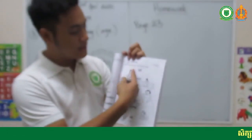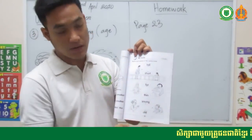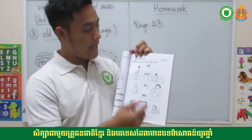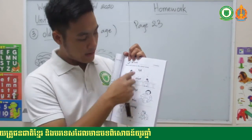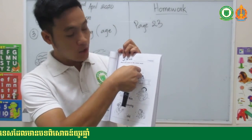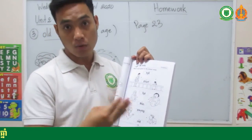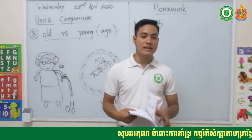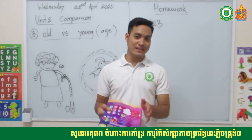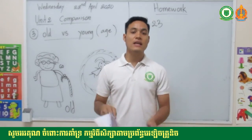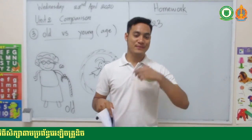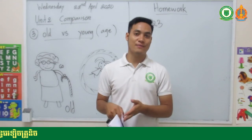The homework on page 23 is to match the person to the correct word. We have six words: tall, short, thin, fat, old, and young, along with six pictures. You need to connect the word to the matching picture in the correct position. That's all for today — please take care of yourself and your family, wash your hands, and keep your distance from groups of people. Thank you!